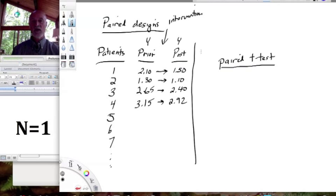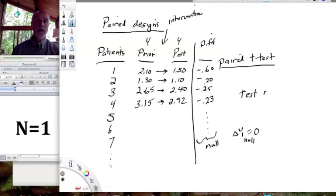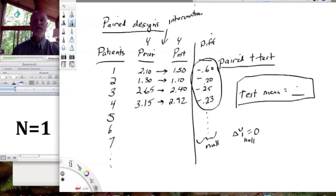We could also do another test, which we've already done, which is the difference pre and post, right? And so the difference pre and post would be minus 0.60 here, minus 0.20 here, minus 0.25 here, minus 0.23 here, etc. And our null hypothesis would be that the pre-post difference, the delta y, would be 0. So that's our null hypothesis. And we could use the test mean equals and have our null hypothesis that equals 0, which is another test we've already talked about. So we could test whether this group of differences we're observing here is significantly different from 0. And that would be a very powerful way of looking at this.